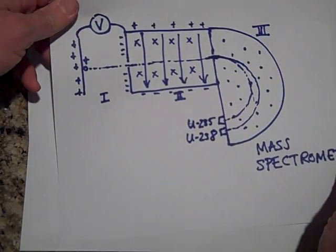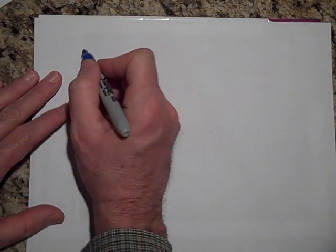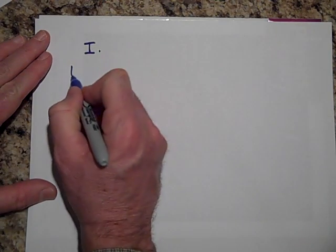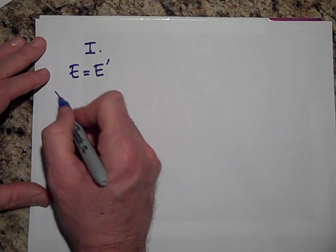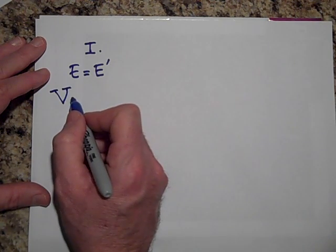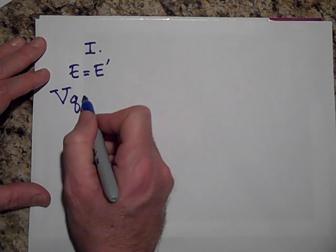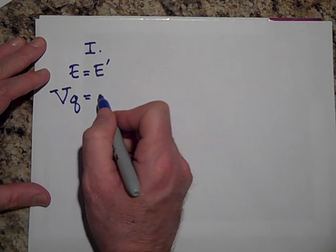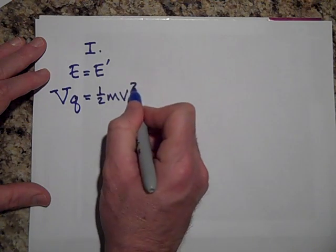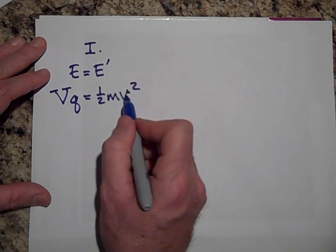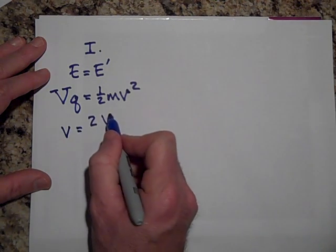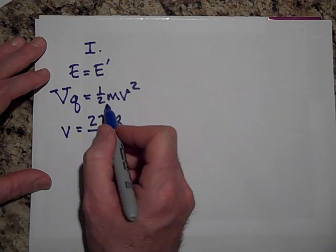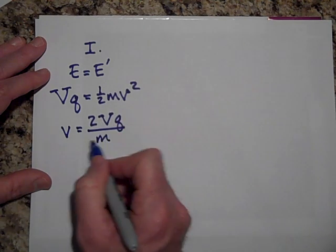Let me show you the physics of each region. Region one: the physics is E equals E prime. The energy it has at the beginning is Vq (that's potential energy Vq), and then the energy it has once it gets to the other side is one-half mv squared. You can find the velocity - the velocity is going to be the square root of 2Vq over m.